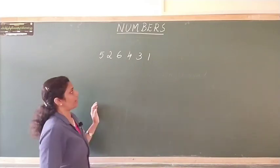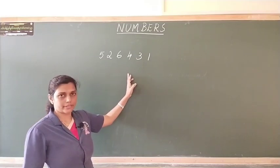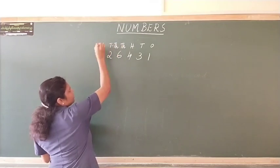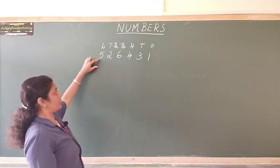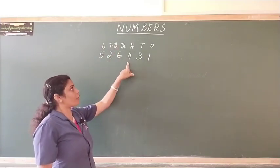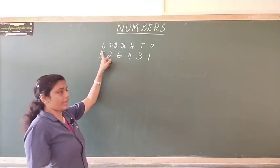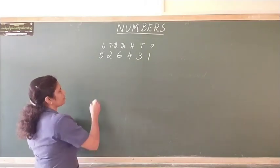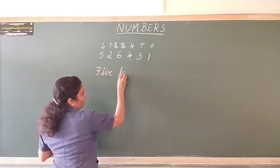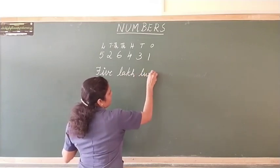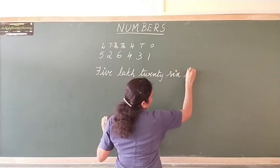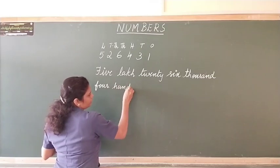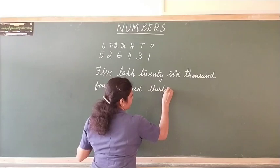To understand this 6 digit numbers even better, let us take one more example. So, here I have one more 6 digit number, so how do we read this now? Let us write the place values. Ones place, tens place, hundreds place, thousands place, then tens thousands place and lakhs place. So, to read this we start here, 5,26,431, again I repeat 5,26,431, let us write this in number name. Five lakh twenty-six thousand four hundred thirty-one. Again I repeat this.